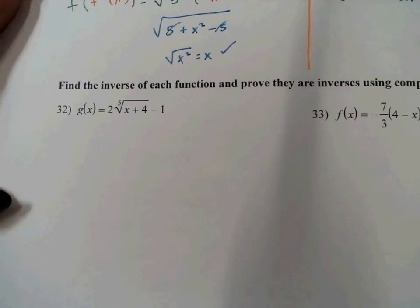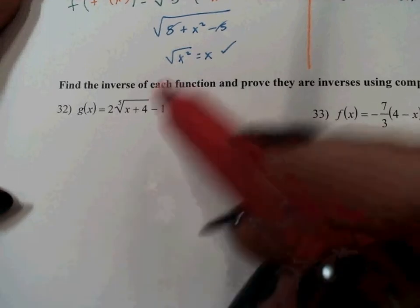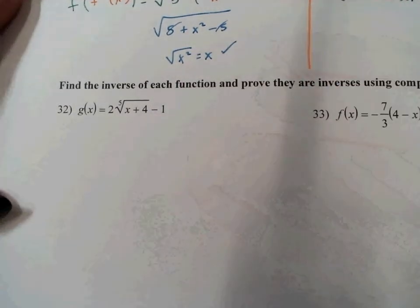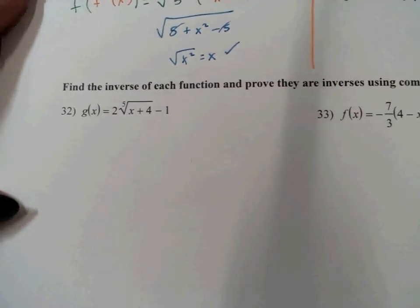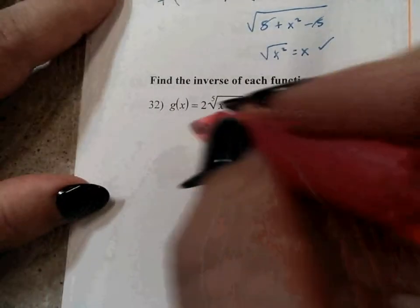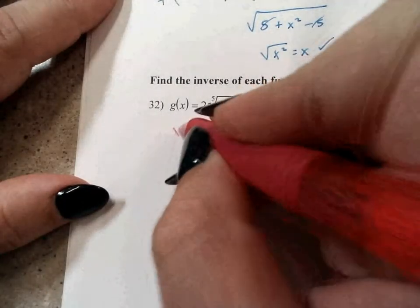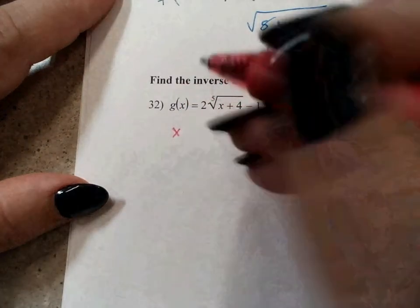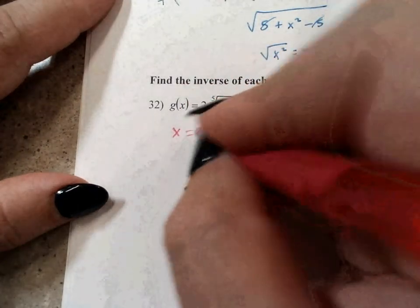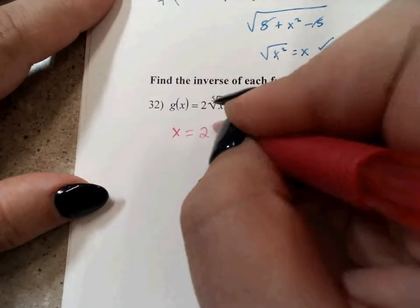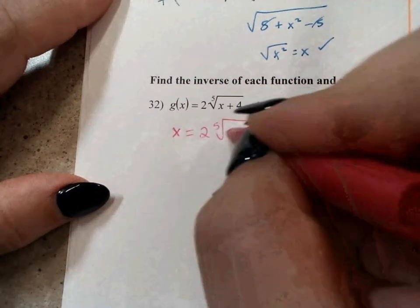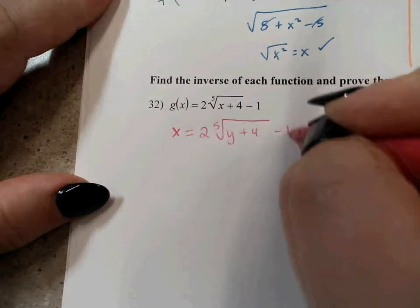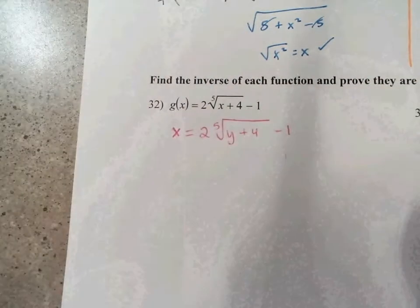We're trying to find the inverse of this fifth root function. So what we're going to do is first switch x and y, that being the understood y. So we have 2 times the fifth root of y plus 4, and then minus 1 on the exterior.